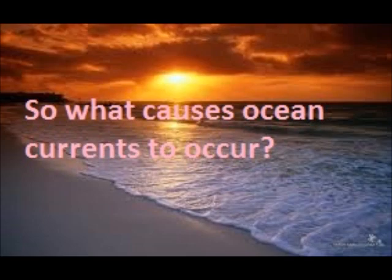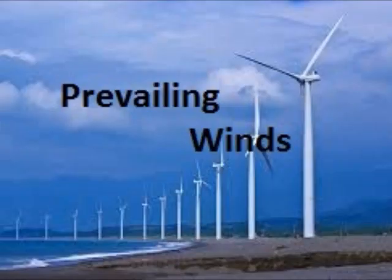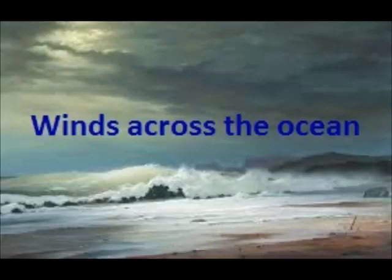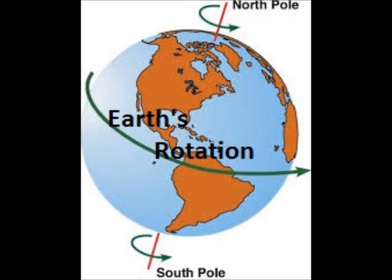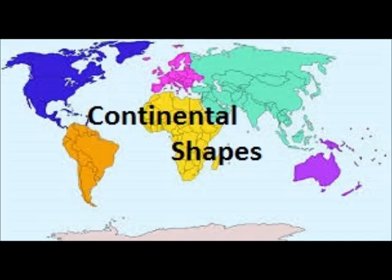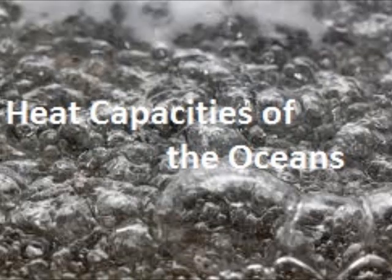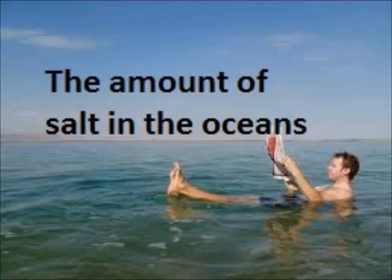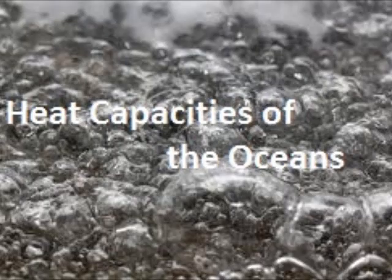What causes ocean currents to occur? Prevailing winds, convection currents, winds across the ocean, the influence of the earth's rotation, continental shapes, heat capacities of water, air pressure, and the amount of salt in oceans. Let's talk about some of these causes.